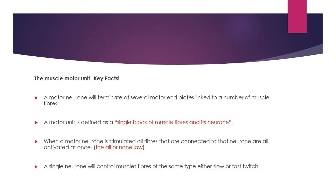Some motor unit key facts to finish. A motor neuron will terminate at several motor end plates linked to a number of muscle fibres — this is happening on a massive scale. A motor unit is defined as a single block of muscle fibres and its neuron, so a specific neuron will be responsible for causing muscular contraction in a specific block of muscle fibres. When a motor neuron is stimulated, all the fibres connected to that neuron are activated at once — this is the all-or-none law. Those muscle fibres either contract fully or not at all. A single neuron will control muscle fibres of the same type, so we'll have specific neurons for either our slow or fast twitch fibres.